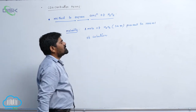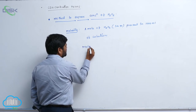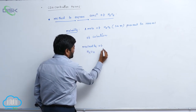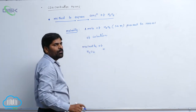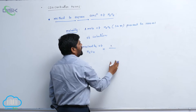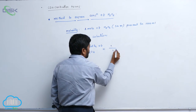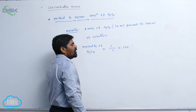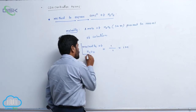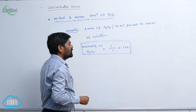The number of moles here is 1. So molarity of hydrogen peroxide equals number of moles, which is 1 mole, divided by 1000 ml — meaning one liter. Therefore the volume of solution is one liter, and it becomes 1 molar hydrogen peroxide.